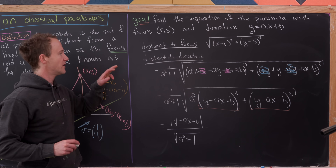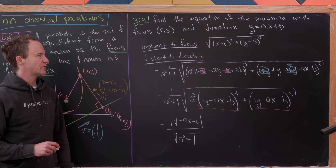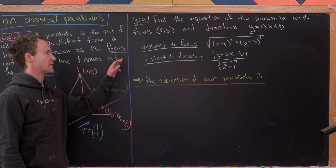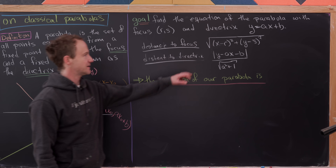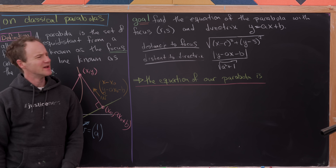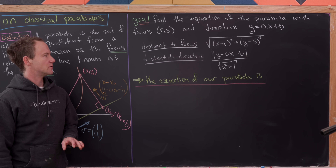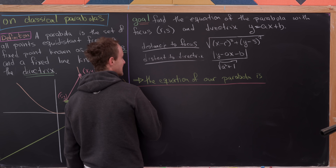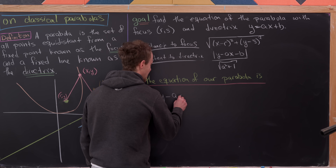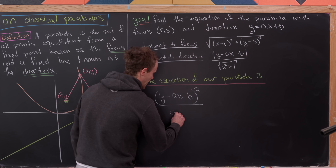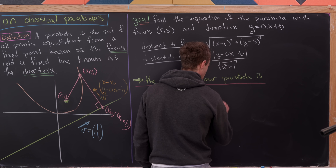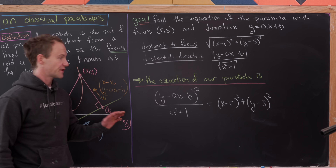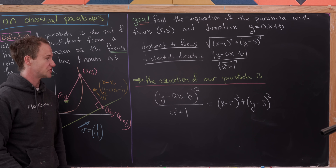Now we're ready to piece things together. The distance from the focus must equal the distance to the directrix, so we set the two expressions equal. Since both represent distances and are positive, we can square both sides without losing information. This gives us: (y minus ax minus b) squared over (a squared plus 1) equals (x minus r) squared plus (y minus s) squared. That's the fairly general equation of this parabola.